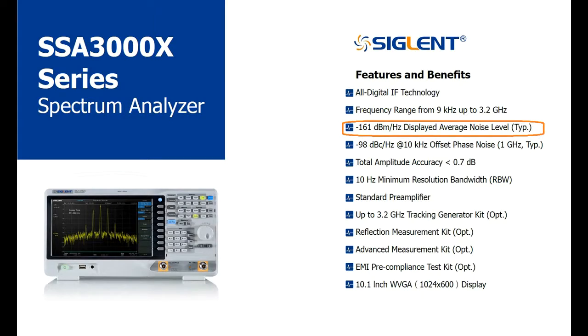DANL stands for displayed average noise level and it indicates the noise floor of the instrument. Lower noise floor values enable you to observe lower power signals. This is especially important when you are hunting for harmonics of a signal or potential interference sources.